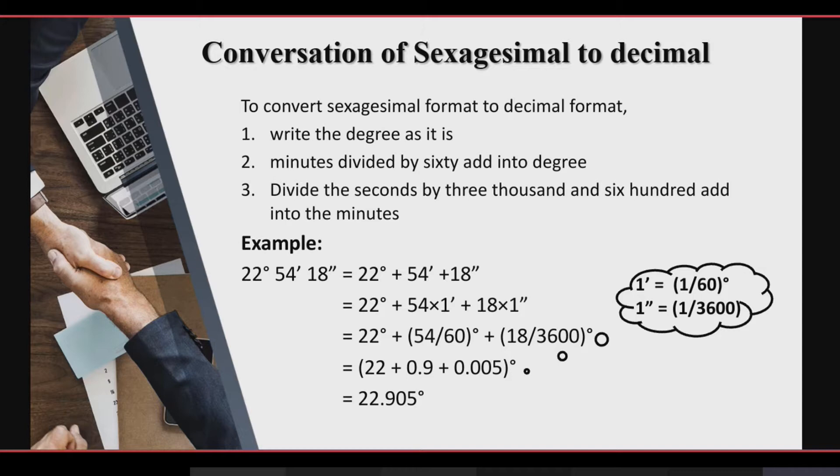So we have the total amount in degrees: 22 plus 0.9 plus 0.005 degrees is equal to 22.905 degrees, which is in decimal form.